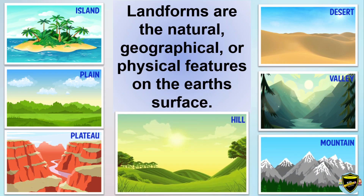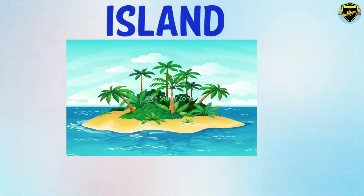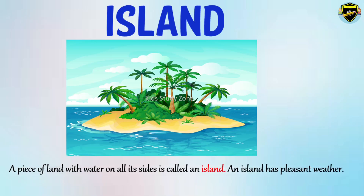Starting with Island. A piece of land with water on all its sides is called an island. An island has pleasant weather.